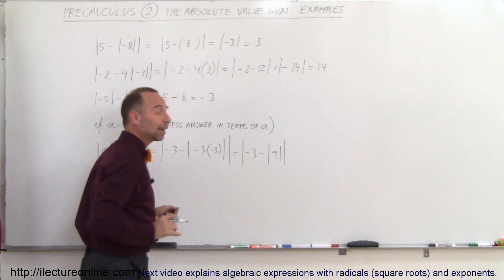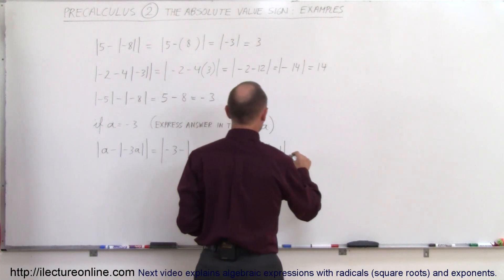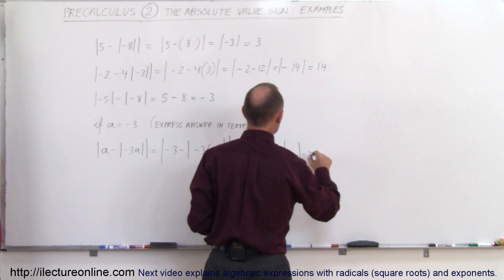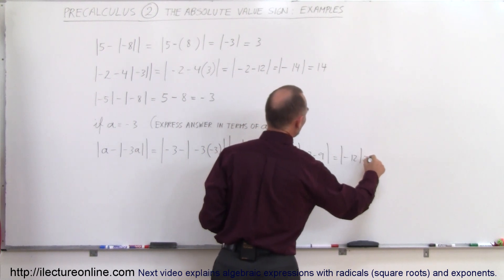You can simply take the absolute value symbol away because the absolute value of a positive number is the positive number, so this equals the absolute value of minus 3 minus 9, which equals the absolute value of minus 12, which equals 12.